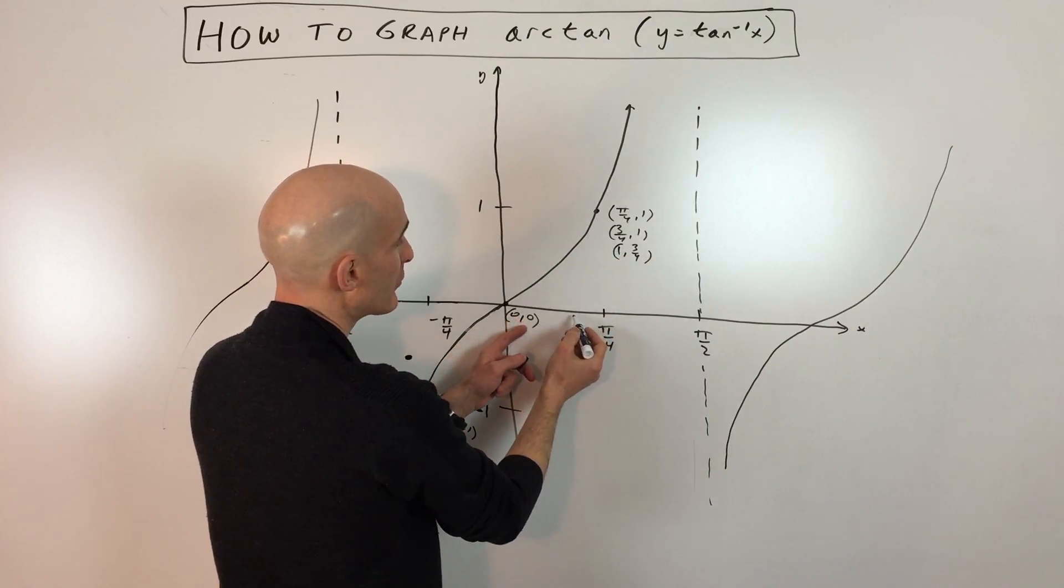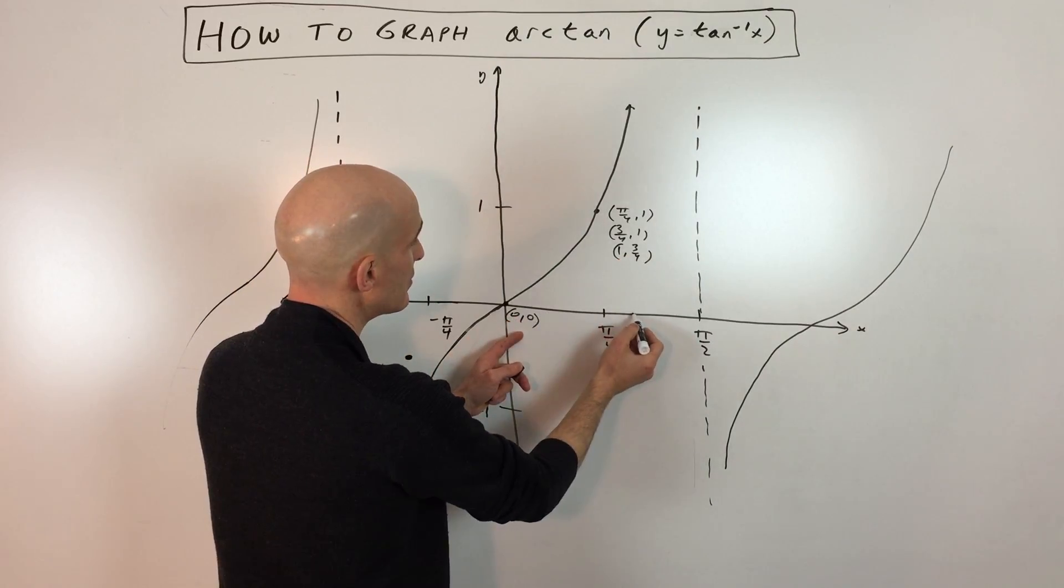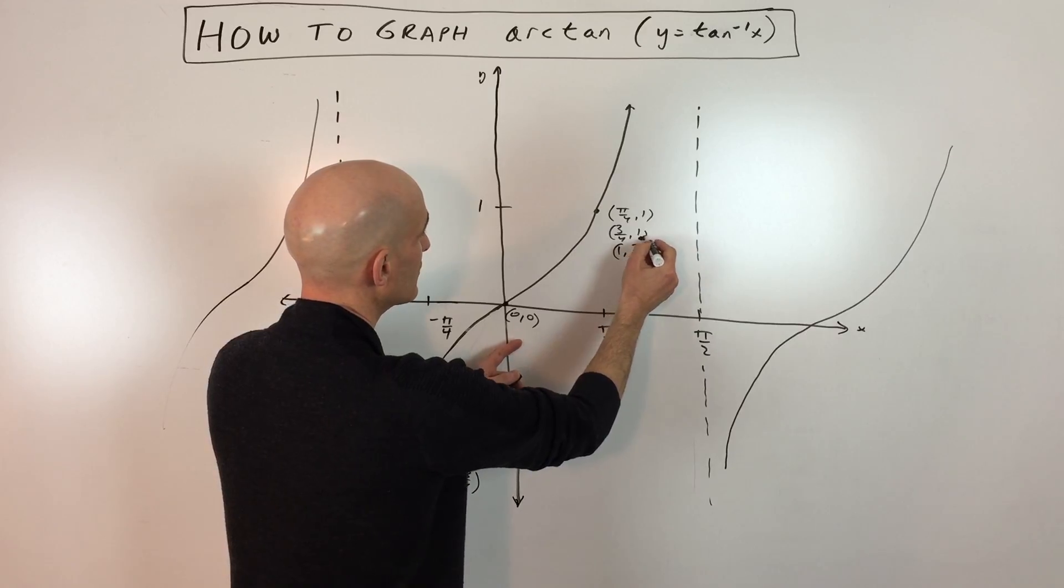And then 1 comma 3 fourths is going to be right about here and right about here.